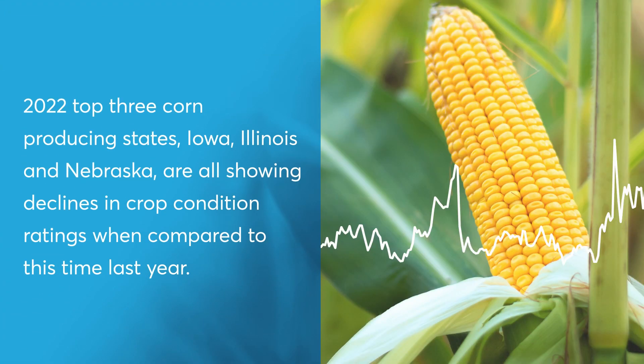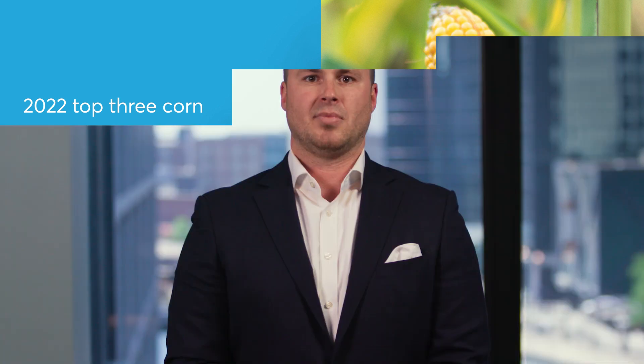Last year's top three corn producing states — Iowa, Illinois, and Nebraska — are all showing declines in crop condition ratings when compared to this time last year. Above normal temperatures and below normal precipitation paired together are looked at as the culprit.